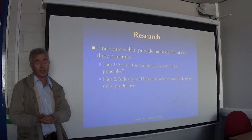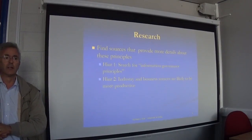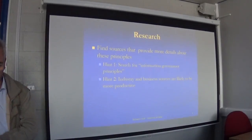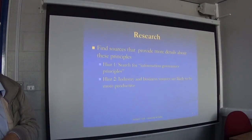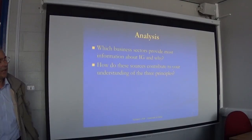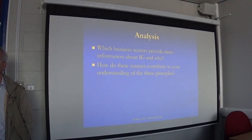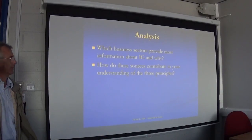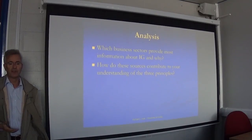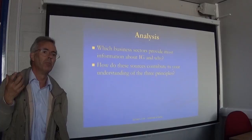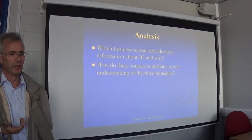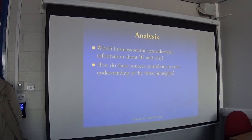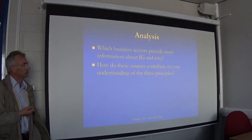Industry and business-type sources are most likely going to be your best ones — so the professional organisations who have their websites about these sorts of things. Find as many sources as possible. Then, as you're doing that, think about which business sectors — things like education, aerospace, health, manufacturing, retail — are providing you with the best and most guidance about good quality information governance principles.